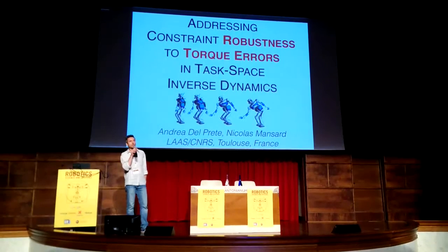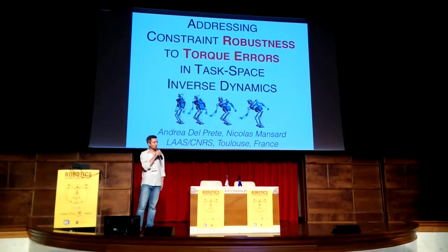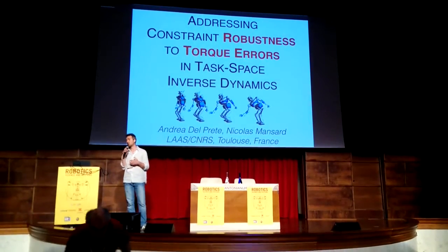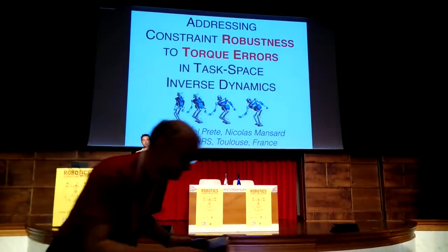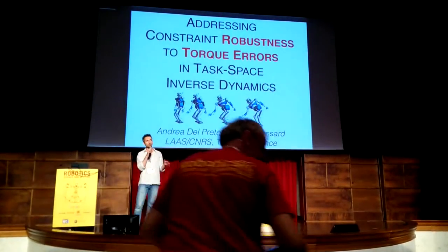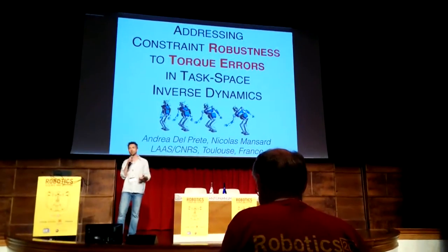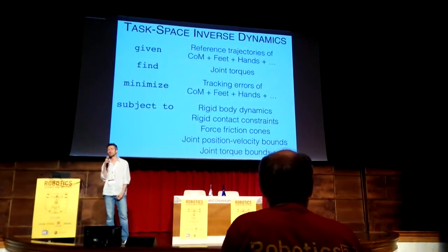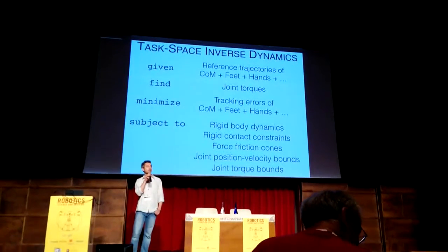Today I will present an extension of the control framework known as task-based inverse dynamics that allows you to take into account errors in your joint torque tracking so as to improve the robustness of the controller. First of all, what is task-based inverse dynamics?